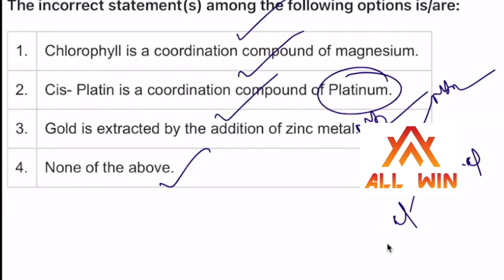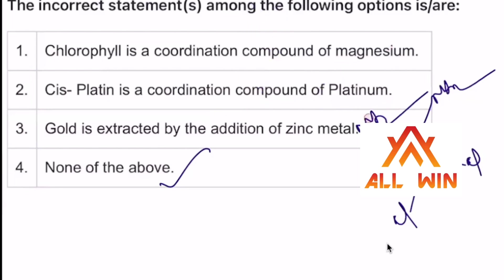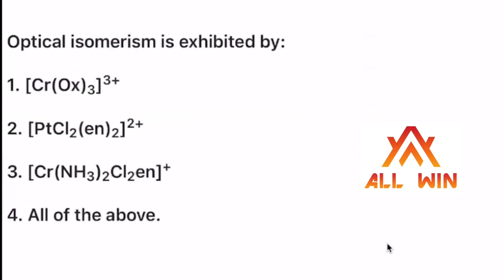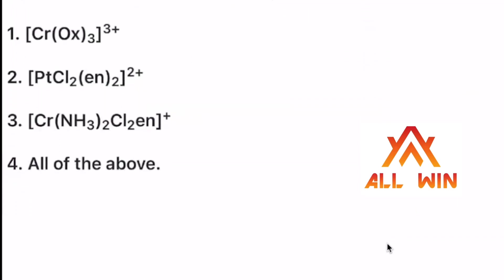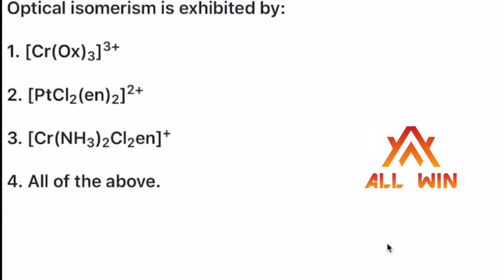So option 4? Anti-cancer drug, just causal skills. Optical isomerism is exhibited by — optical isomerism is exhibited by.